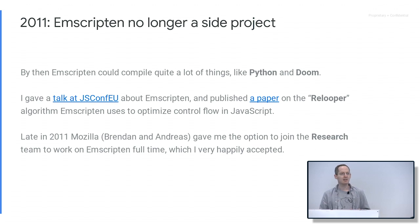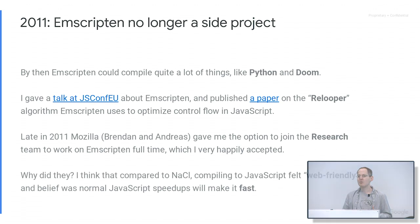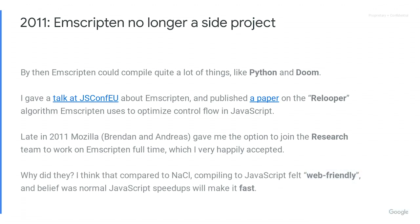Later in the year, Mozilla gave me the option to join the research team and work on this full-time as my day job — I was super happy to say yes. Why did they do that? They understood that native code on the web matters: we want to run games and other high-performance things. There were worries about NaCl. They felt that compiling to JavaScript is the safe, web-friendly option — it uses web APIs normally, JavaScript already runs in all browsers, it doesn't need a plugin. And the belief was that JavaScript is just getting faster and faster, so Emscripten shows this can work and everything will be great.